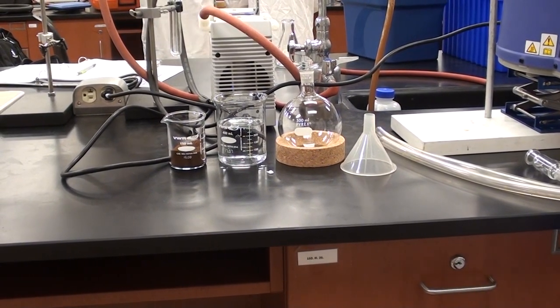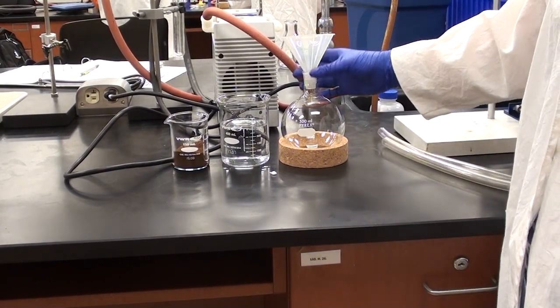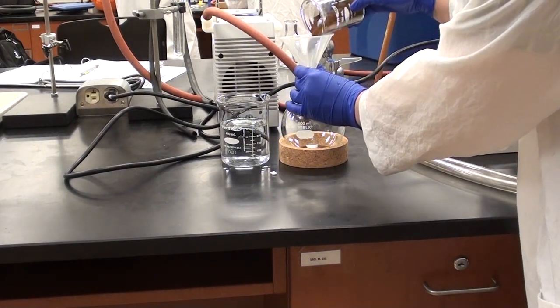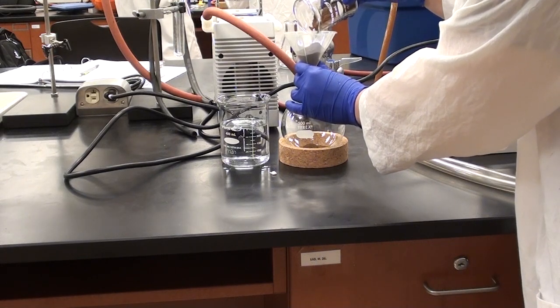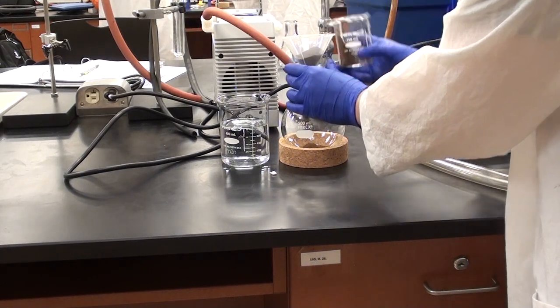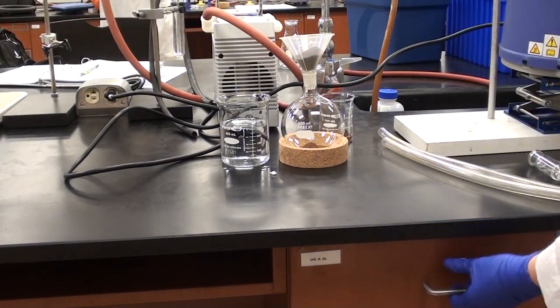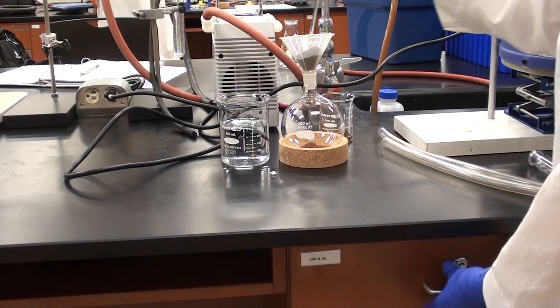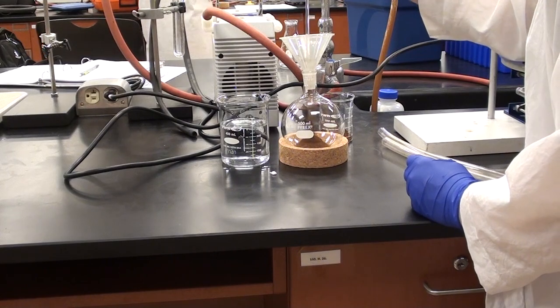So Cassie's weighed out the cloves, and now she's going to add the cloves to the round bottom flask. She's just going to go ahead and pour that in. She's using a powder funnel, which is a really good technique. You might need to use a spatula to push that through, or possibly a stirring rod.